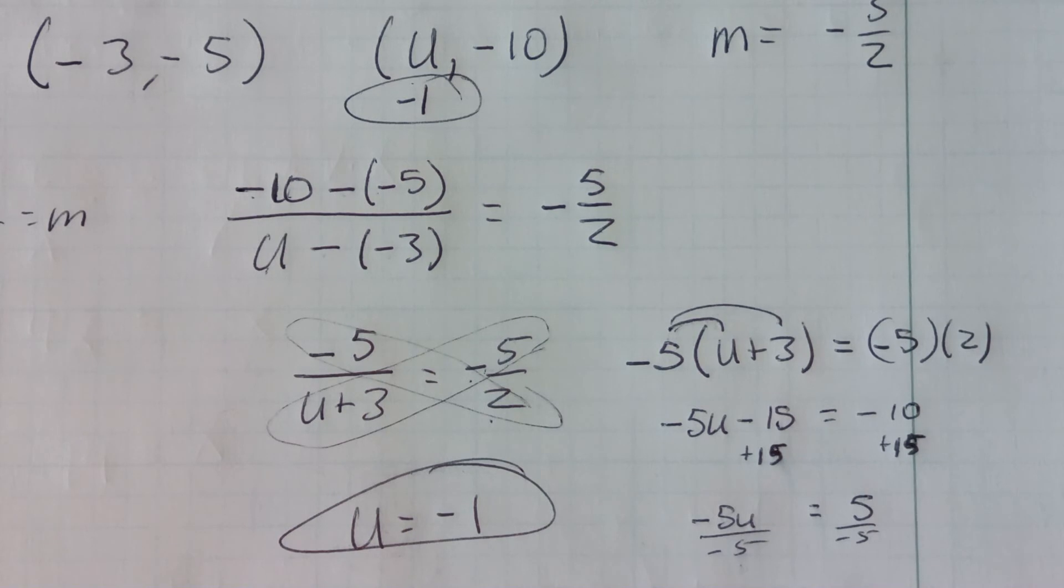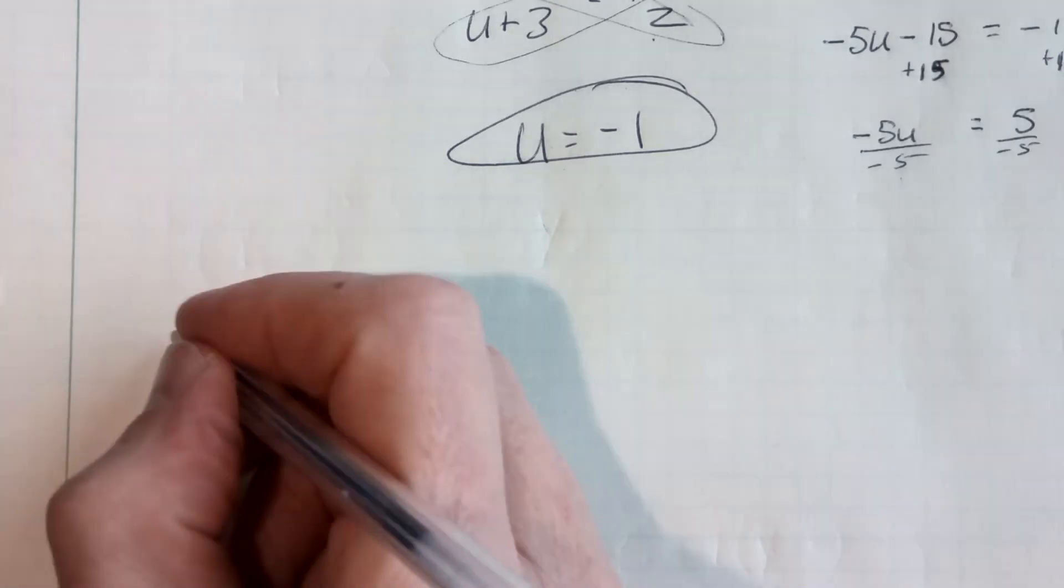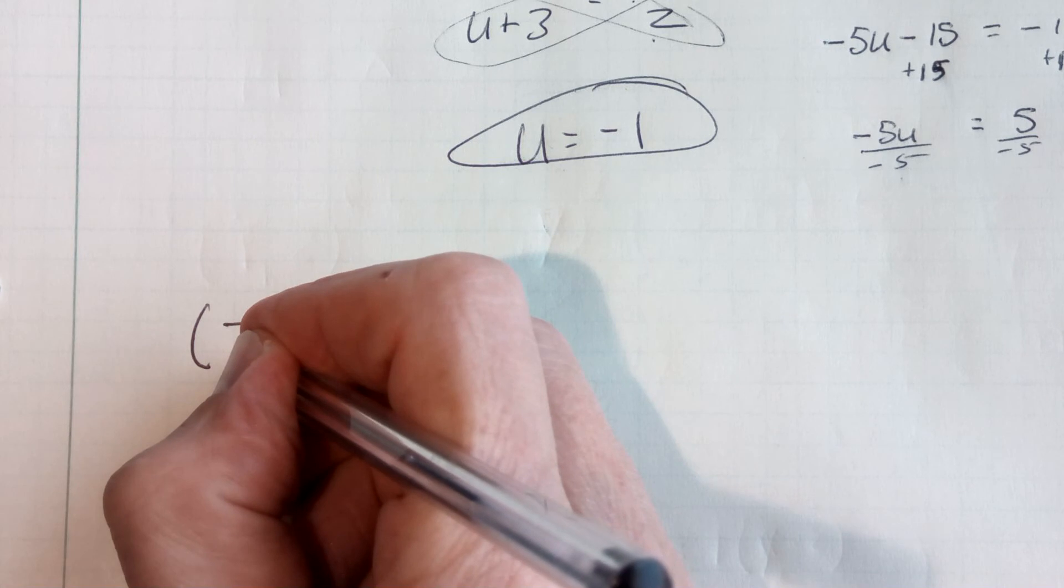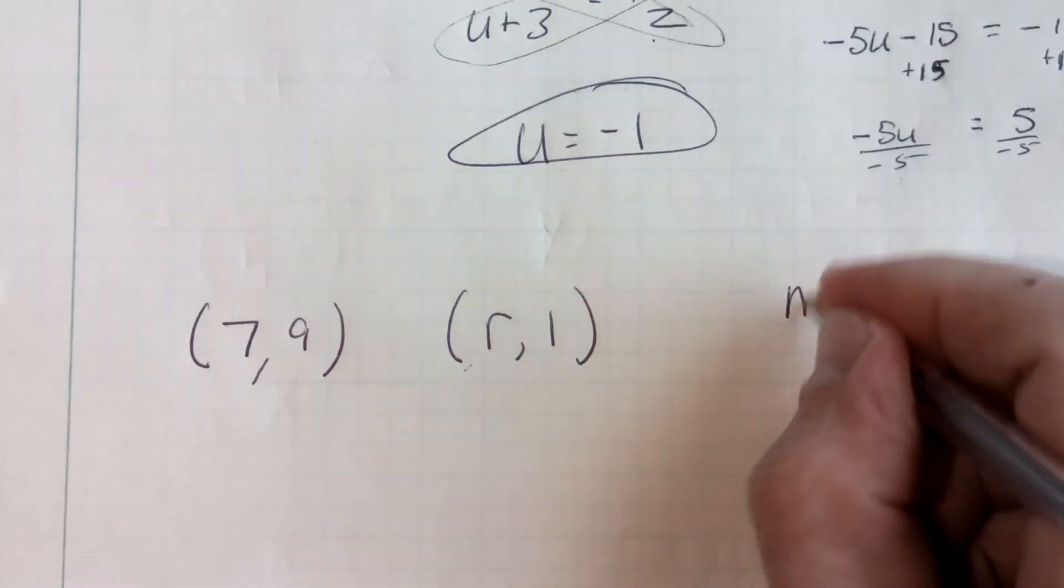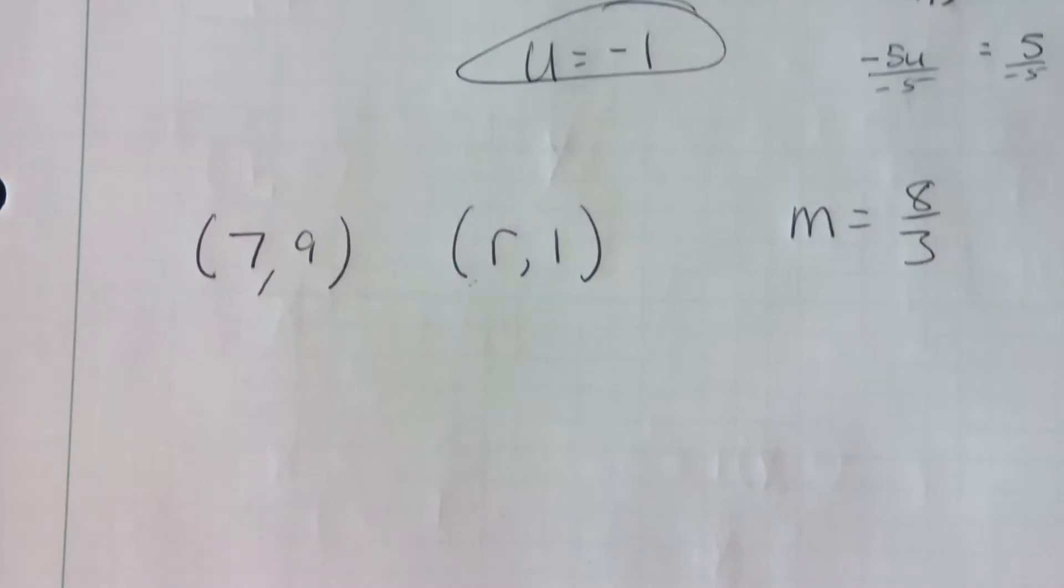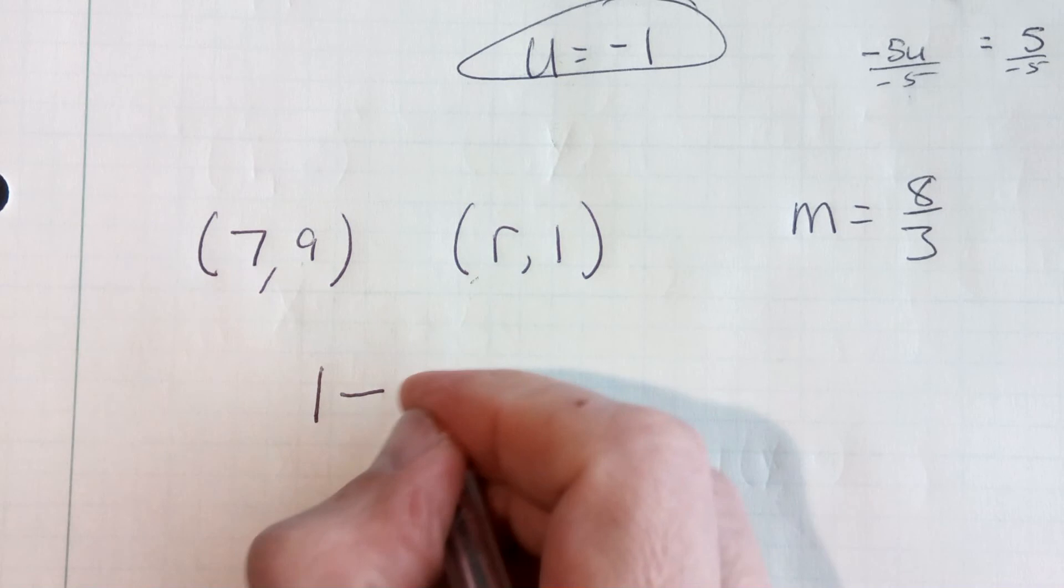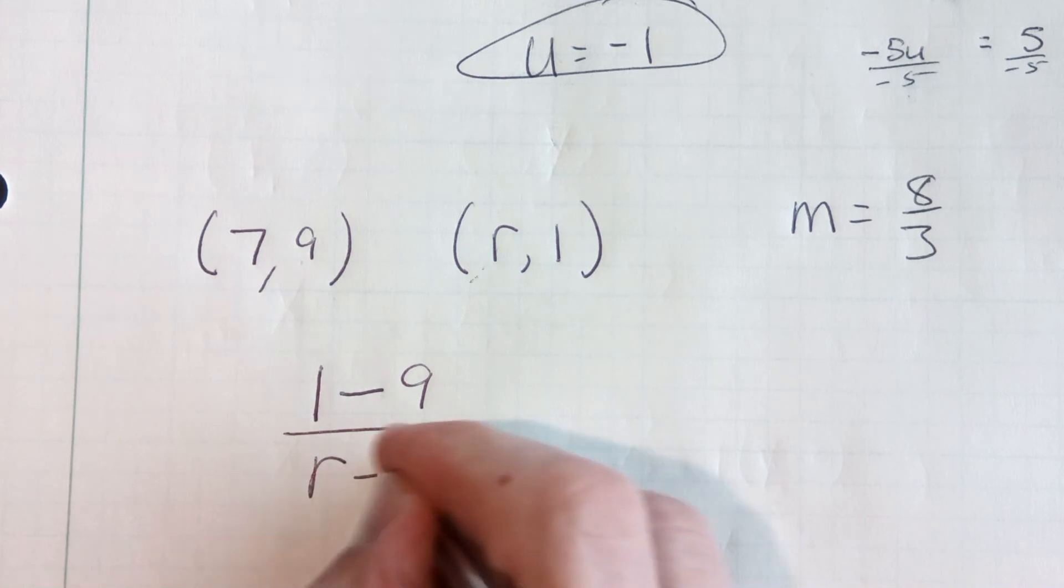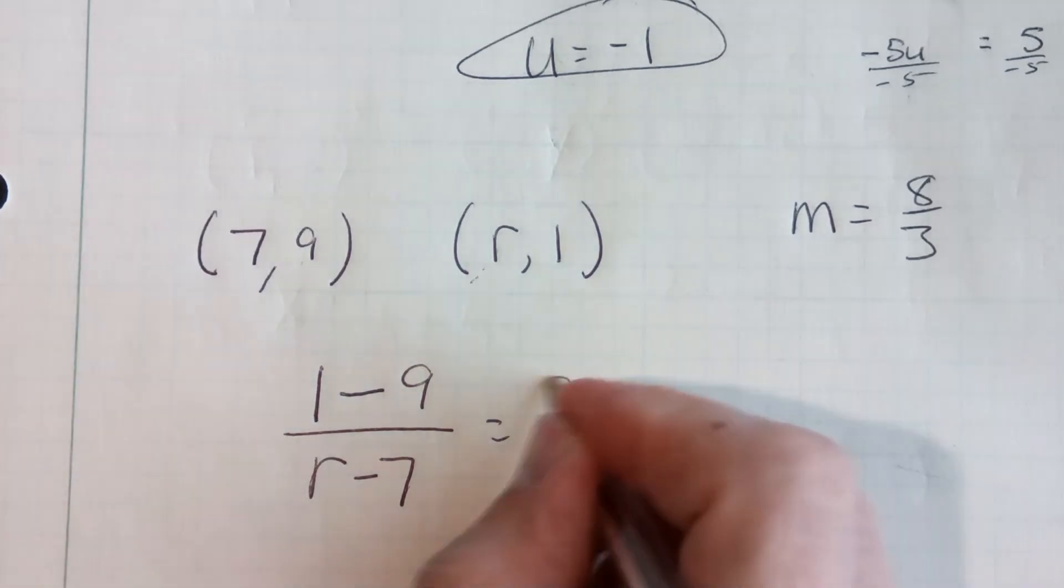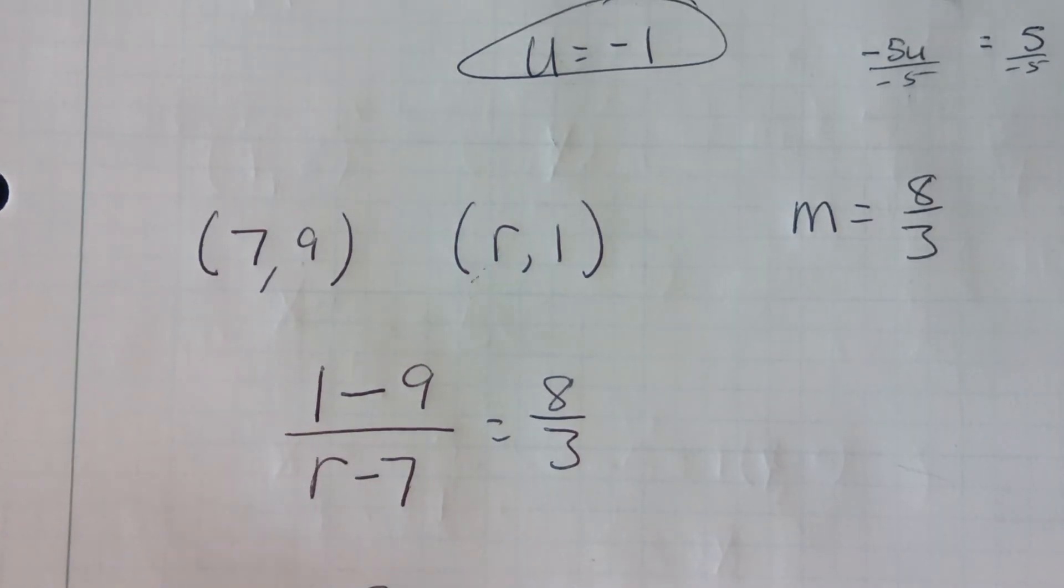Let's do one more. Let's do the point (7,9) and the point (r,1). So I'm missing an x value. And let's say we have a slope of 8 thirds. Again, I'm going to take my second y value minus off my first y value over my second x value, which is r minus off my first x value, which is 7, equals my slope, which is given to be 8 thirds. Now I'm going to reduce that top here. 1 minus 9 is negative 8 over r minus 7 equals 8 over 3.